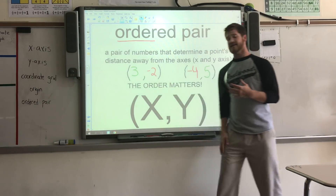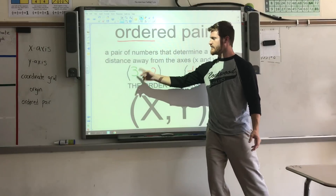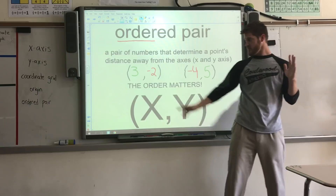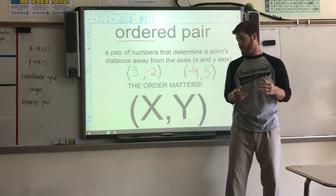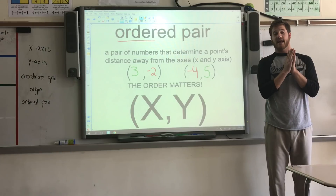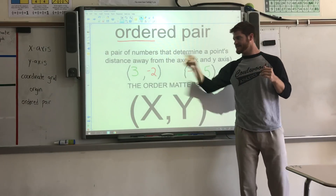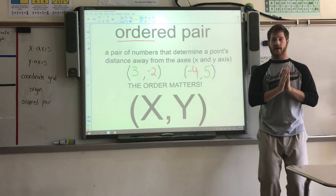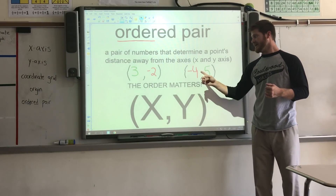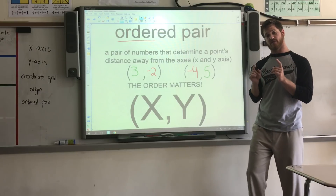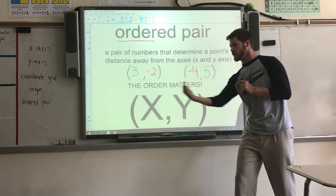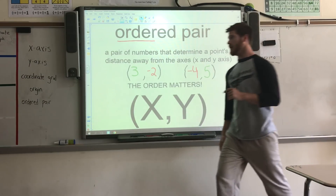Looking at three comma negative two: since it's a positive three and I'm moving on the x-axis, I'm going three to the right. At the comma, you can take a pause. After I move three to the right, then I look at the y — that's negative two, it's in the red, it's negative. So after I move three to the right, I'll be moving two down. Starting with the x — it's always x comma y. It's in red, it's a negative four, so I'll be moving four to the left, and then it's a positive five. After I move four left, take a break, then I'll be moving five up.